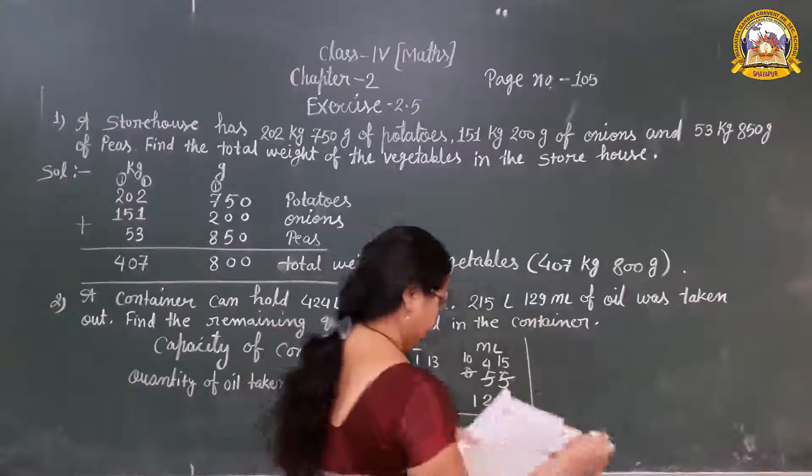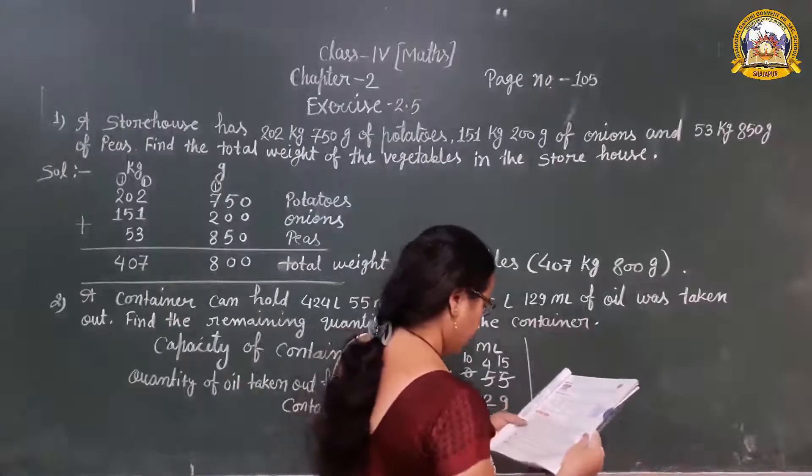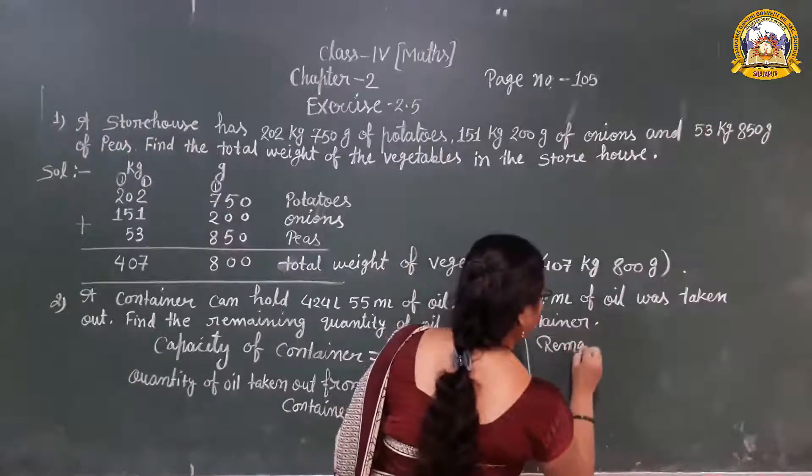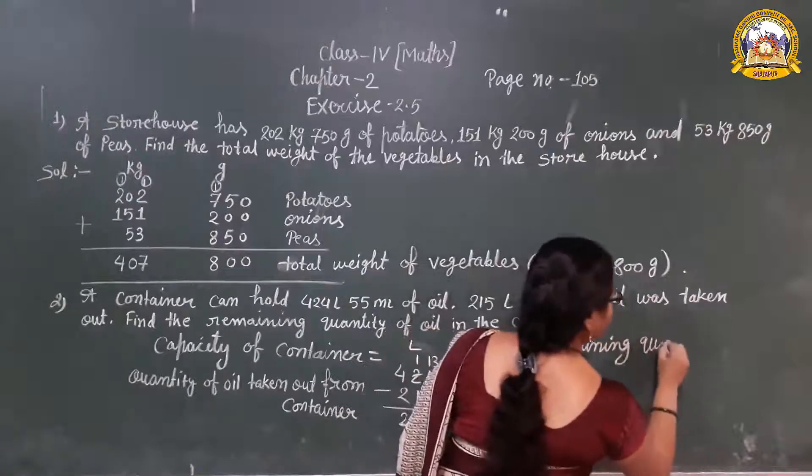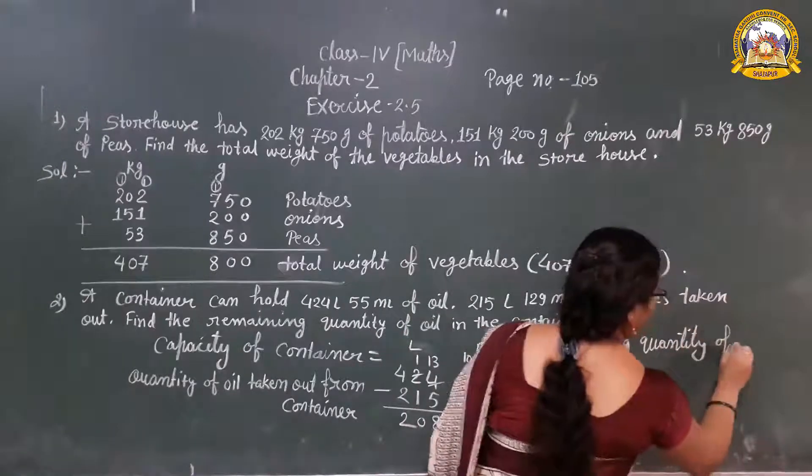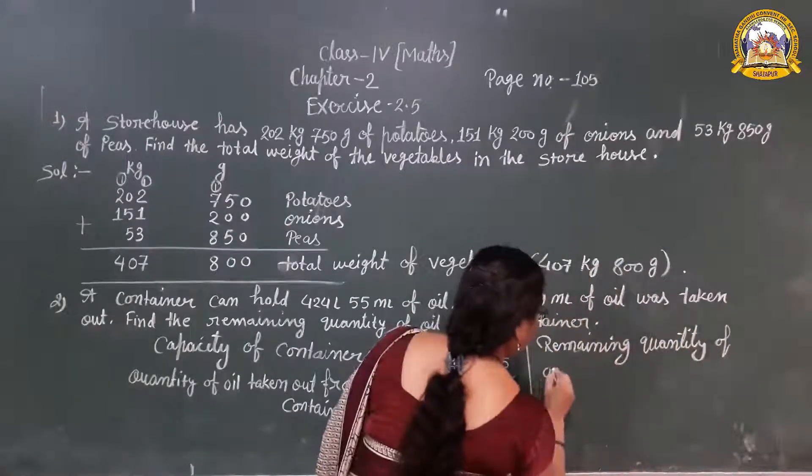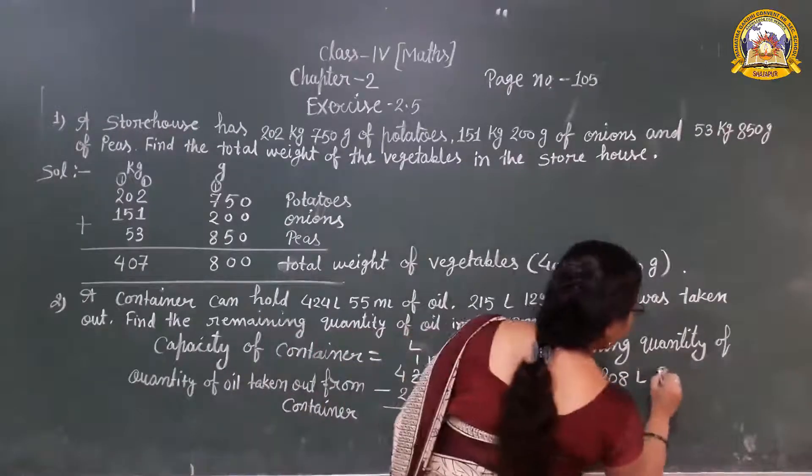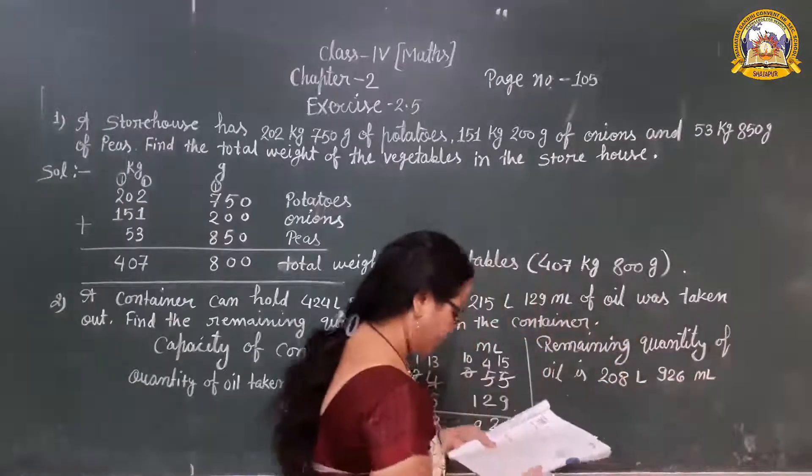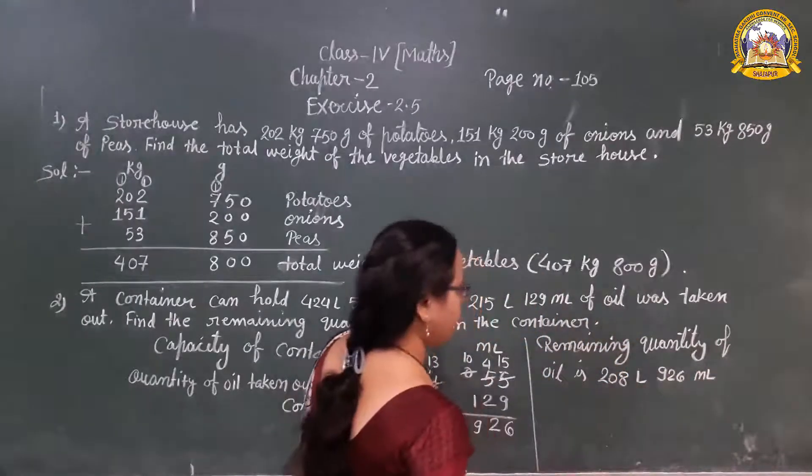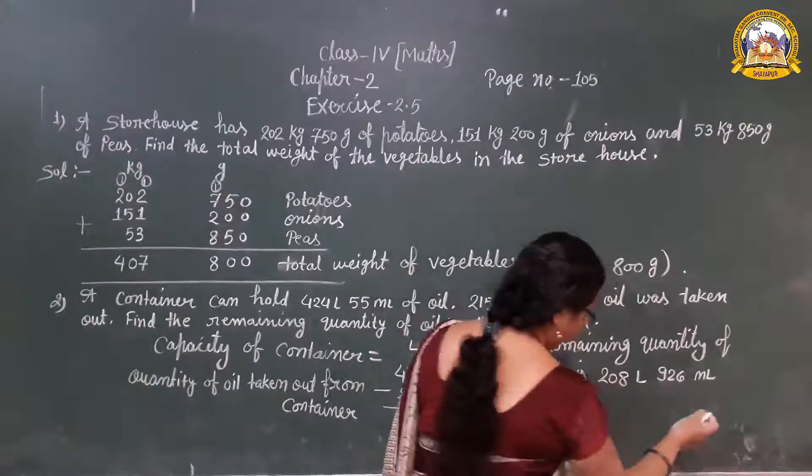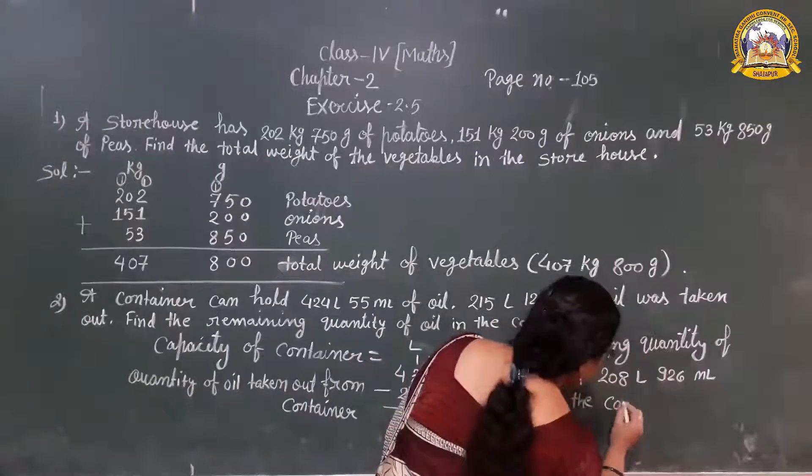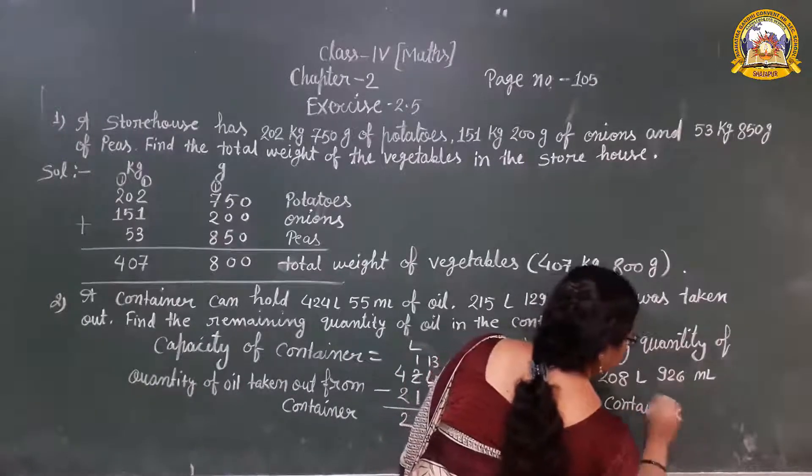So we can write the answer here. Find the remaining quantity of oil in the container. So the remaining quantity of oil is 208 liter 926 milliliter in the container. That's how you do it.